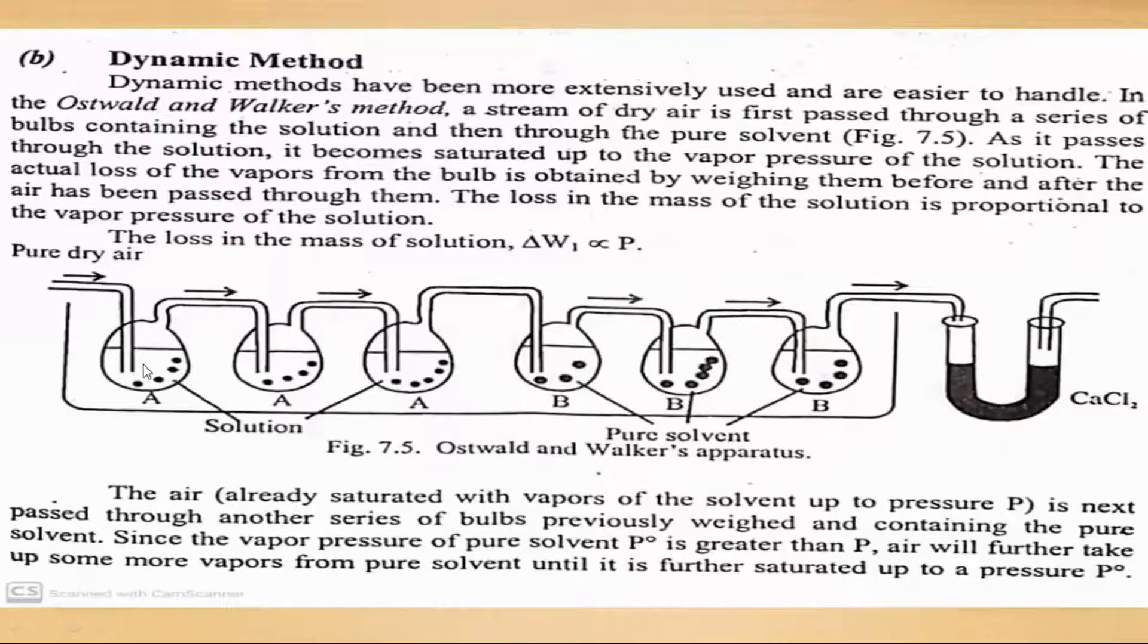The air already saturated with vapors of the solvent up to pressure P is next passed through another series of bulbs previously weighed and containing the pure solvent. Since the vapor pressure of pure solvent is greater than P, air will further take up some more vapors from pure solvent until it is further saturated up to the pressure P°.